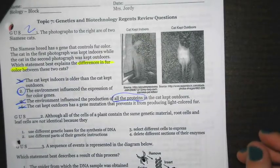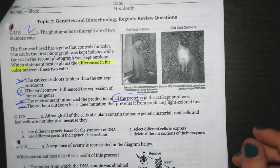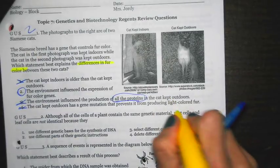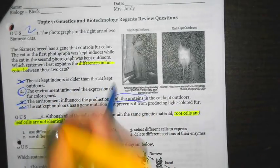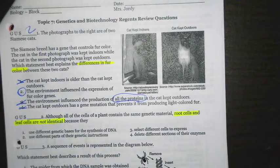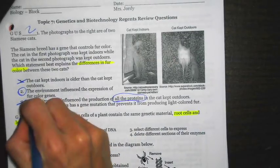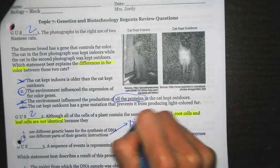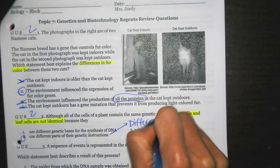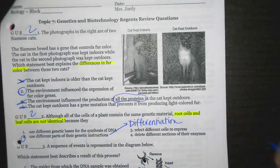Number 2 says, although all of the cells of a plant contain the same genetic information, root cells and leaf cells are not identical because they. So this is saying, even if you look at the same plant, these cells might not be identical. You can even apply this to humans. If you look at an eye cell and a stomach cell, they all have the same genetic information, but they do different things. Why? Why are they capable of doing different things? And that's going to be because of 2. They use different parts of the genetic instruction. This was just on the reproduction section as well. Remember, using different parts of the genetic code is called differentiation.